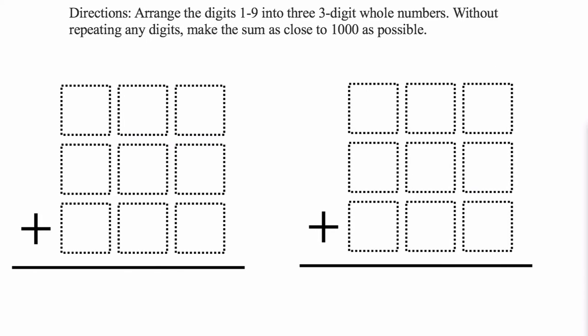Hello and welcome. I came across this great question on OpenMiddle, which is a great math website, and I'll link to it below so you can check it out. But basically the idea is to arrange the digits 1 through 9 into 3-digit whole numbers, and without repeating any digits, make the sum as close to 1,000 as possible.